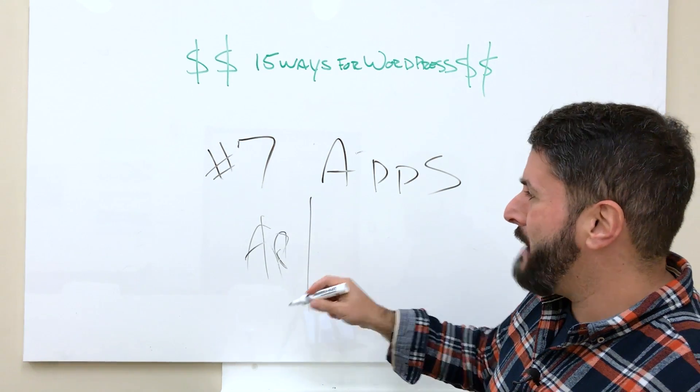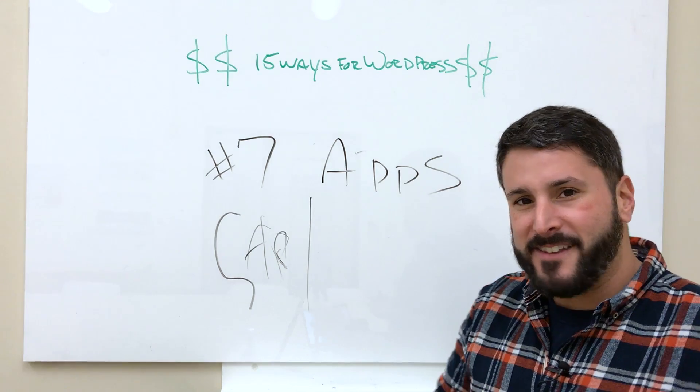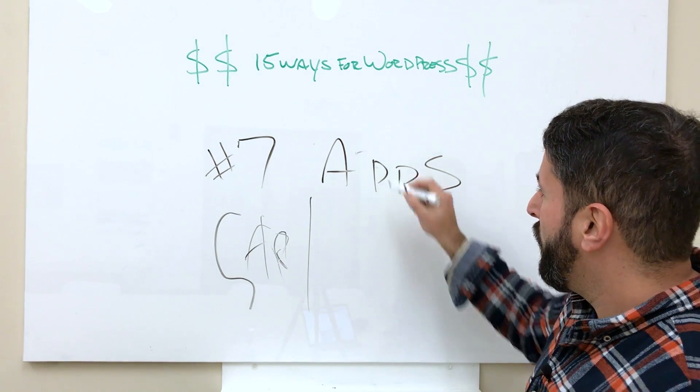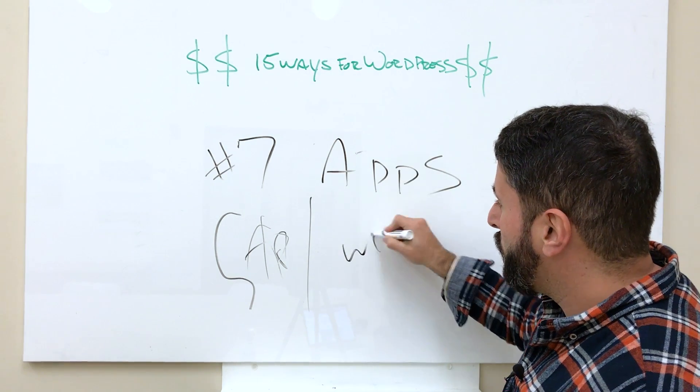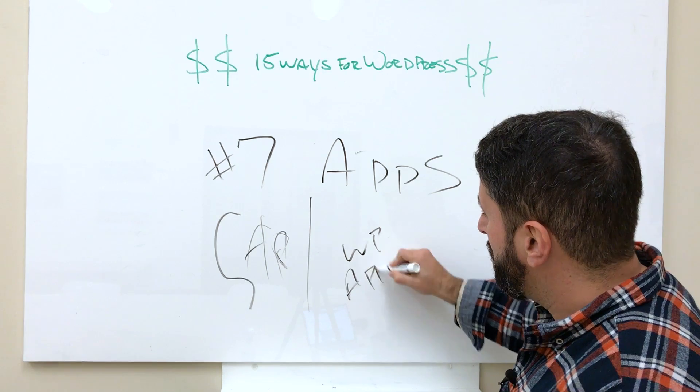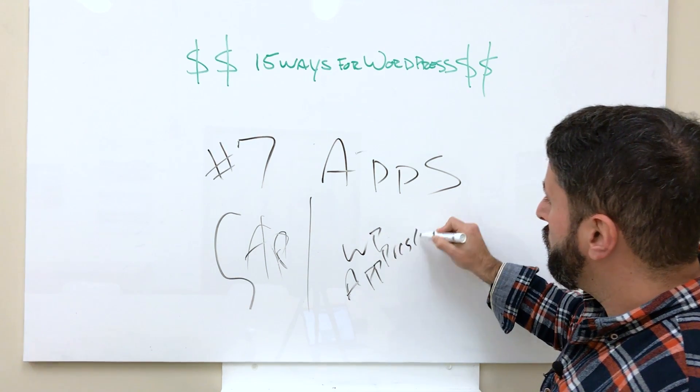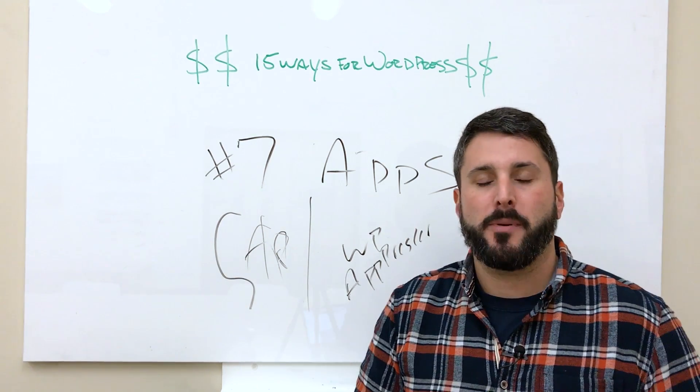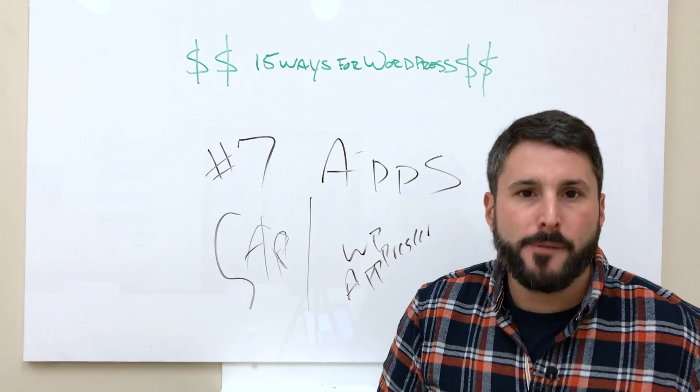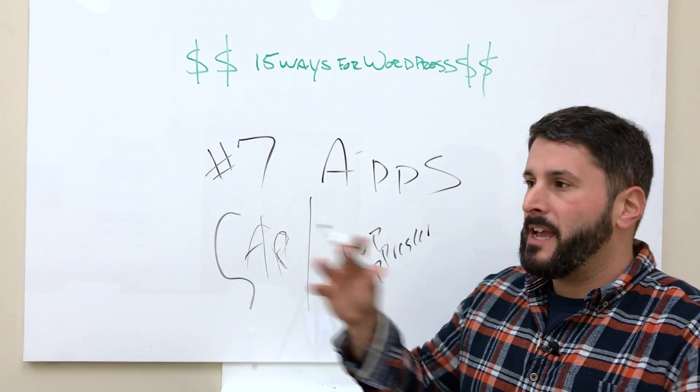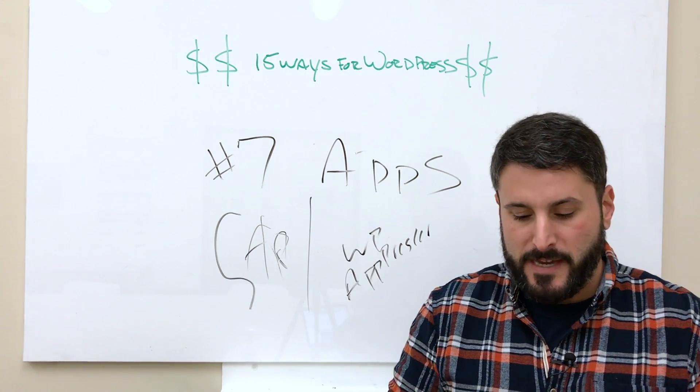So there's two different plays with apps. You can build your own apps where somebody downloads it to their desktop and they can install it. Or you can create an app with WordPress with AppPressor and that will allow you to create almost a native app that you could sell to somebody. You could put it on the app store and try to get people to download it and get some transactions going that way.